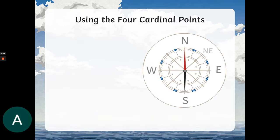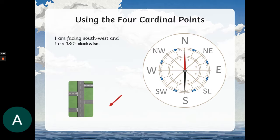So here's my compass points again, all eight of them. This time I'm facing southwest. The red arrow down here will help you with this as well. I'm facing southwest. I'm going to turn 180 degrees clockwise. Now we know that 180 degrees is a half turn. So my half turn means I'm going to be facing the opposite way to the way I started. So I will end up facing northeast.